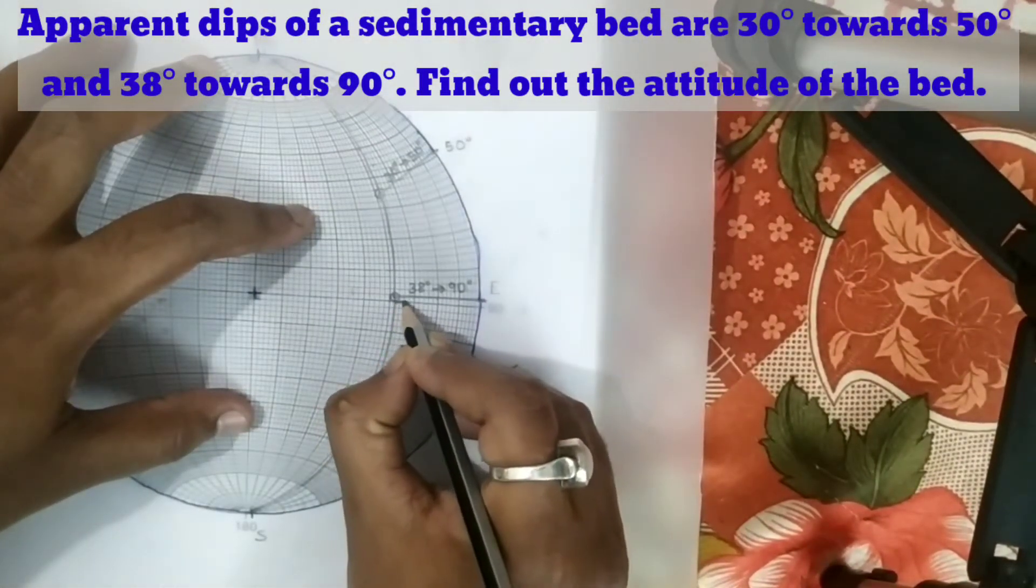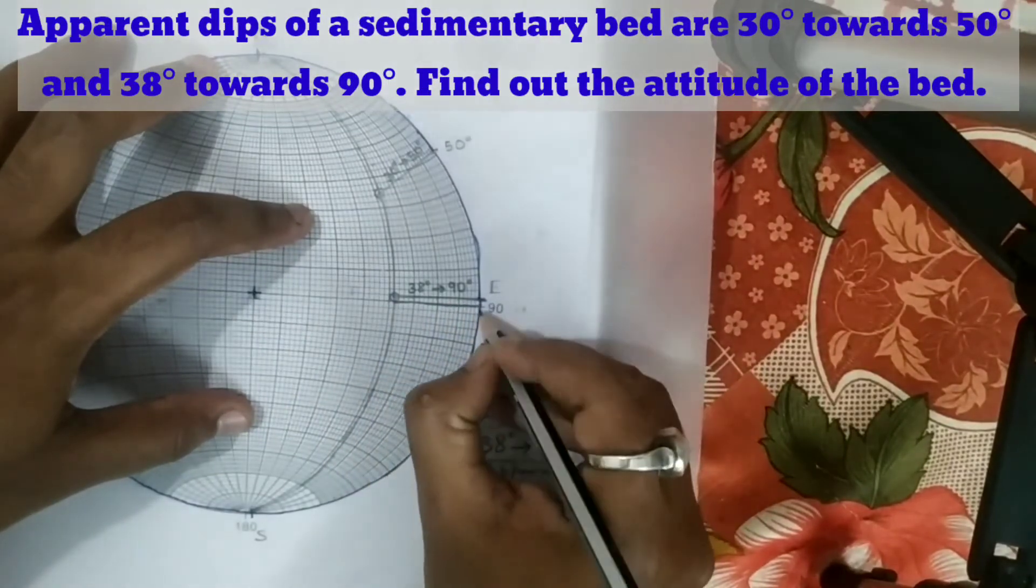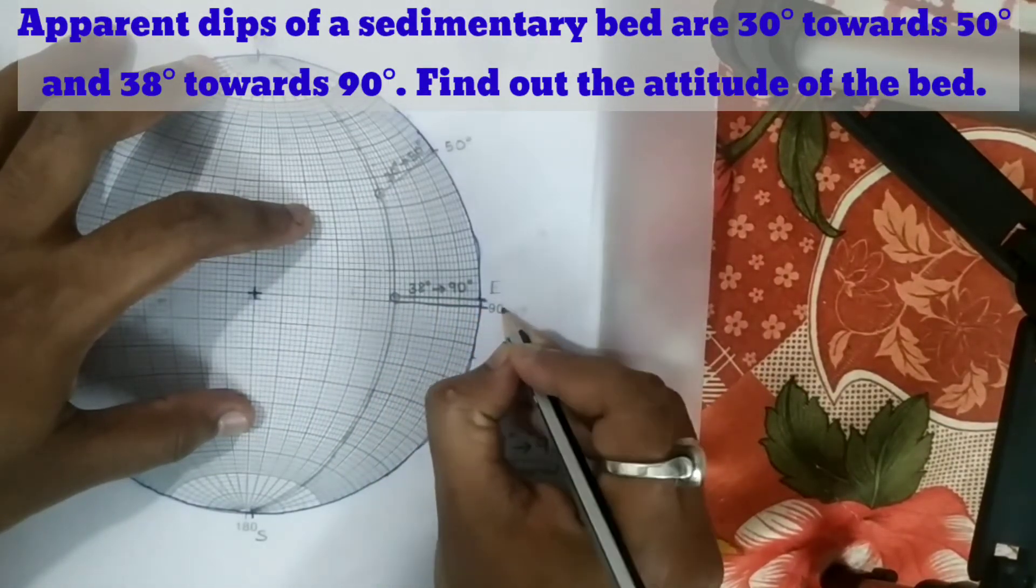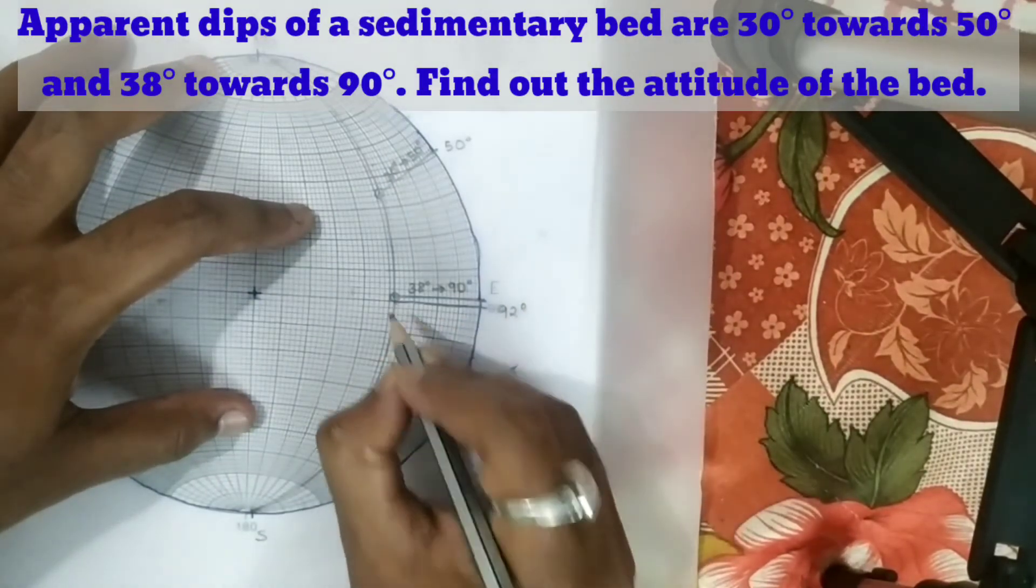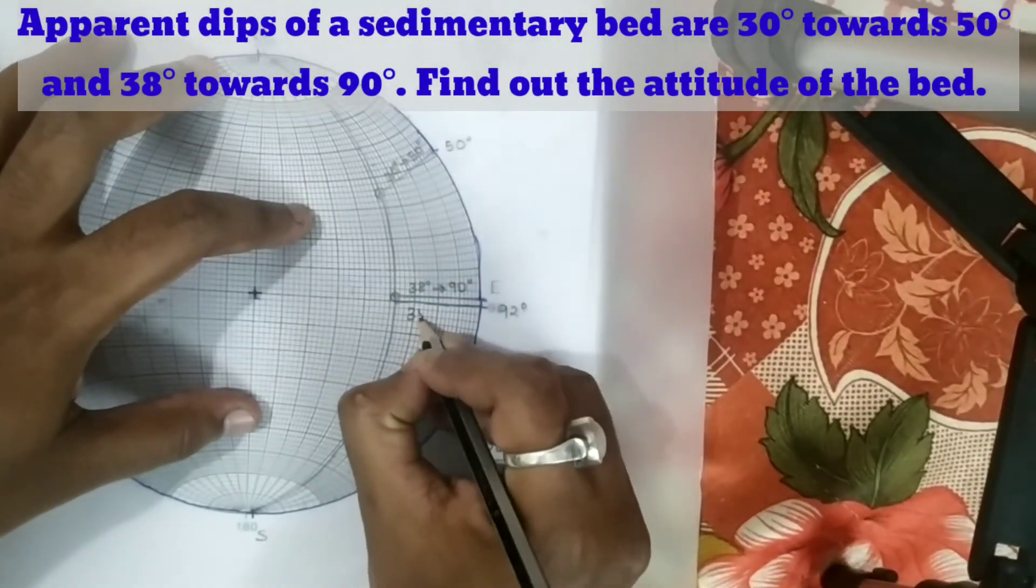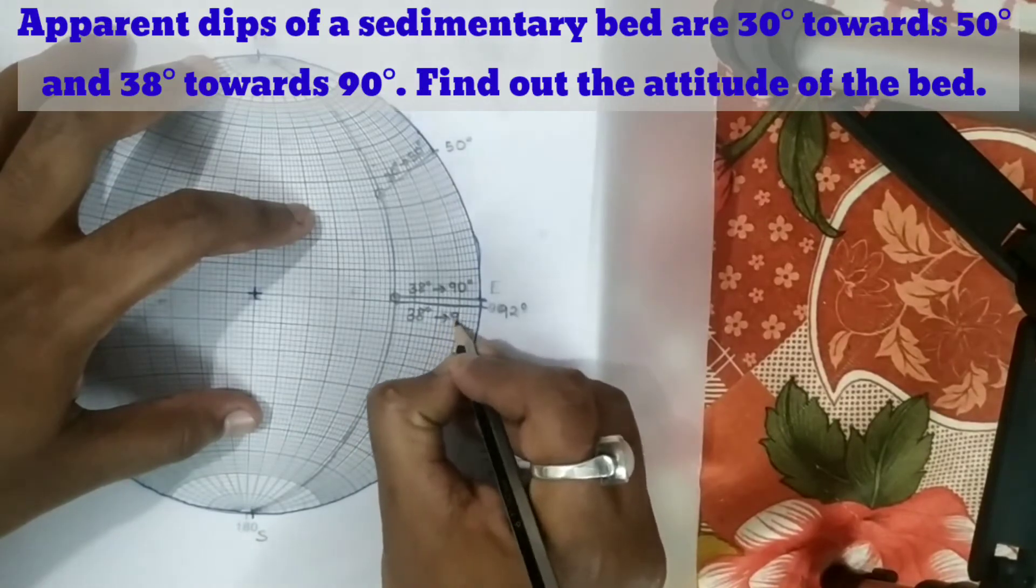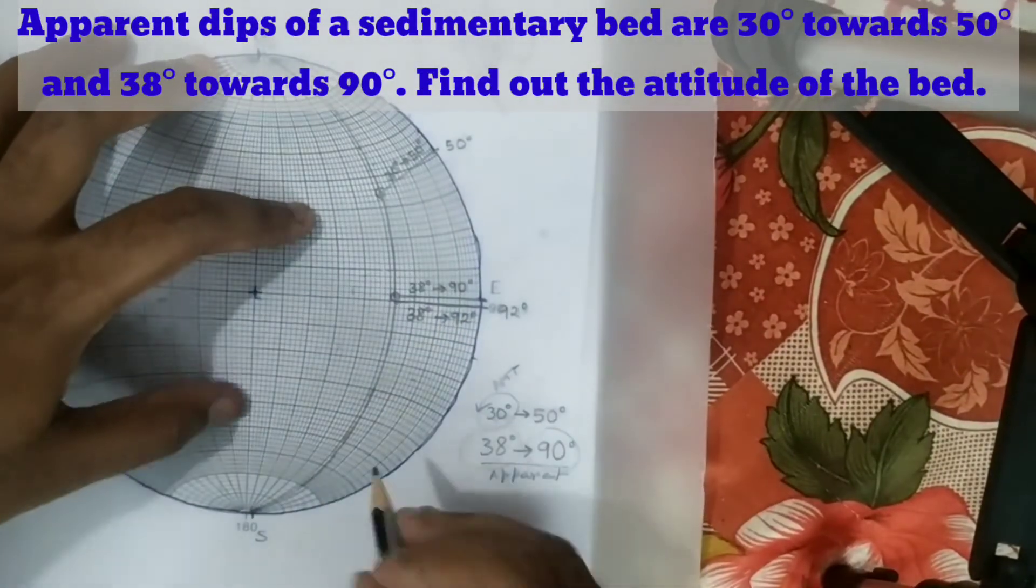And therefore this is the true dip. And this is just 2 degrees. The dip amount is almost the same. So 38 degrees towards 92 degrees is the true dip.